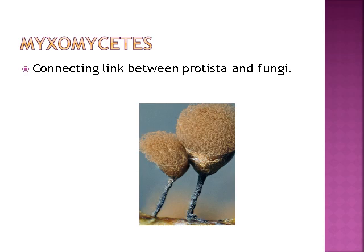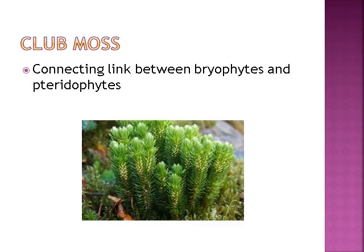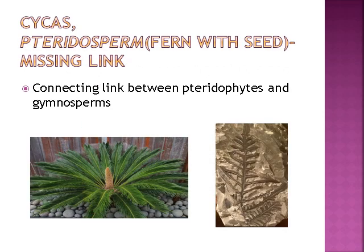Myxomyces is the connecting link between Protista and fungi. Hornworts are the connecting link between Protista and bryophytes. Club moss is the connecting link between bryophytes and pteridophytes. Cycas and pteridosperm — pteridosperm is the fern with seed and is the missing link, whereas Cycas is the connecting link. They are the connecting links between pteridophytes and gymnosperms.